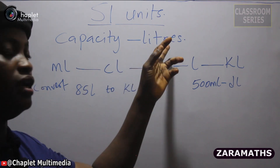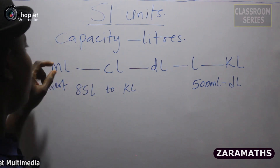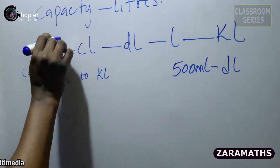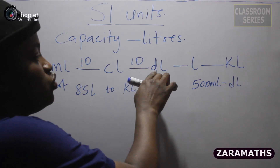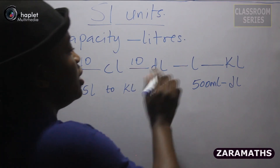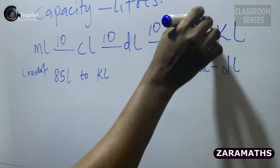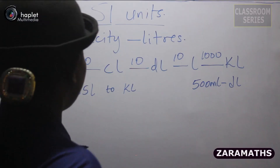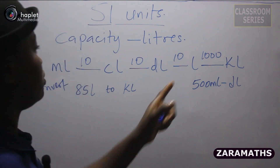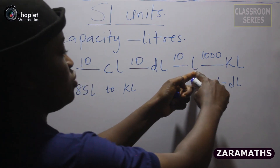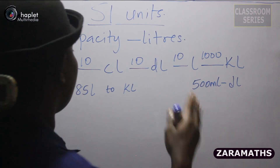The base unit for measuring capacity is liters. Liters are also used for measuring the volume of liquid. 10 milliliters gives 1 centiliter, 10 centiliters gives 1 deciliter, 10 deciliters gives 1 liter, and 1000 liters gives 1 kiloliter. We want to convert 85 liters to kiloliters — here is liters, and we want to convert to kiloliters, so we are moving forward.